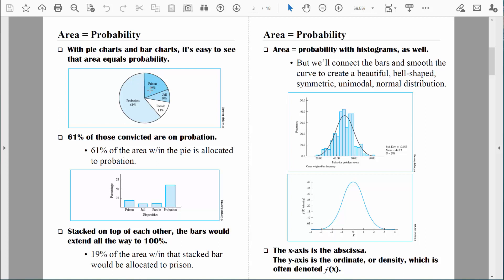So, area equals probability. If I want to figure out what's the probability that someone convicted of a crime is actually on parole, I can figure out the area of this slice of the pie right here. And the area that is taken up by the people on probation is 11%. And that's because 11% of the people convicted of a crime are on probation. Area equals probability.